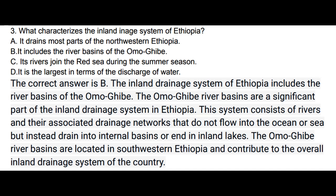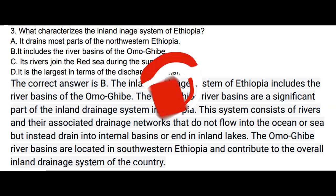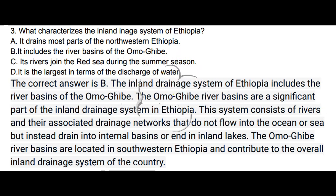Question 3: What characterizes the inland drainage system of Ethiopia? Options include: it drains most parts of northwestern Ethiopia, it includes the river basins of the Omogyib, or it is the largest in terms of discharge of water. The correct answer is b. The inland drainage system of Ethiopia includes the river basins of the Omogyib. This system consists of rivers and drainage networks that do not flow into the ocean or sea, but instead drain into internal basins or inland lakes. The Omogyib river basins are located in southwestern Ethiopia.